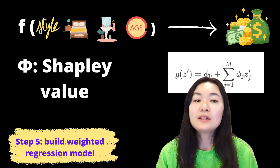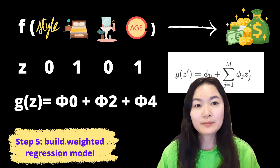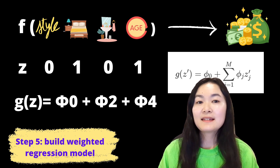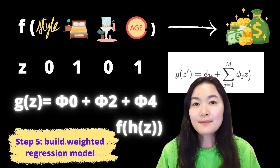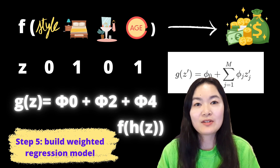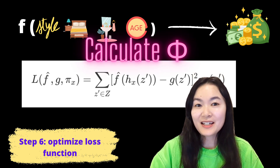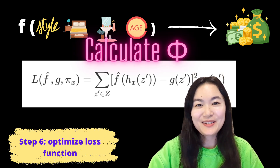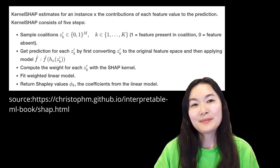Step 5 is to build this weighted regression model. Let's create a new function G, which is the sum of Shapley values for present features in a given coalition Z. In this example, G(Z) is phi_0 plus phi_2 plus phi_4. We want to approximate the sum of the Shapley values to the model output F(HZ). The first half of the loss function minimizes the difference between F(HZ) and G(Z), and there is also a weight function to provide the weight for each Z. We then optimize this loss function to calculate phi, which are the Shapley values. To recap, here's the algorithm for Kernel SHAP. Hope you have a better understanding of this algorithm now. Thank you.